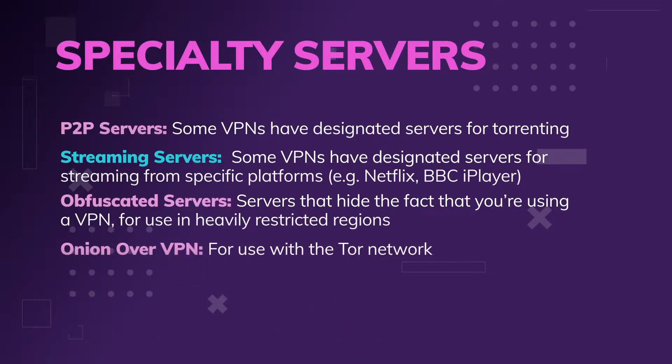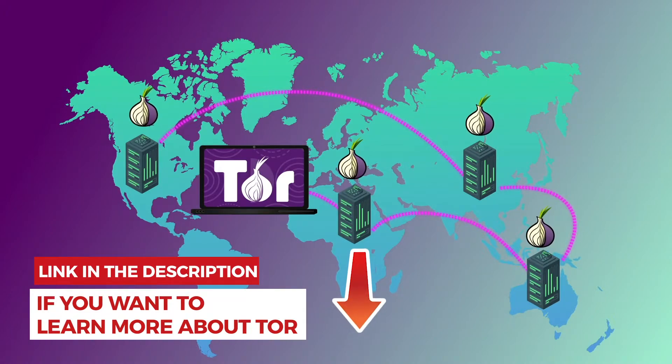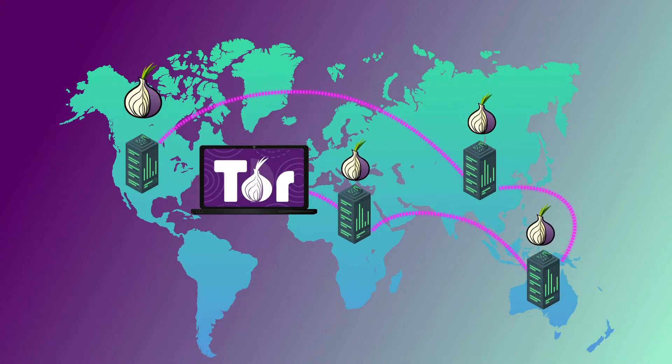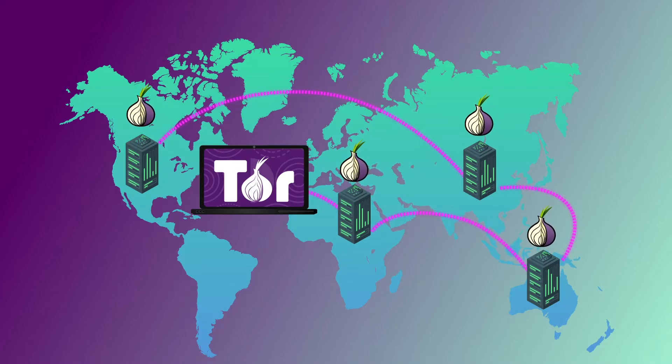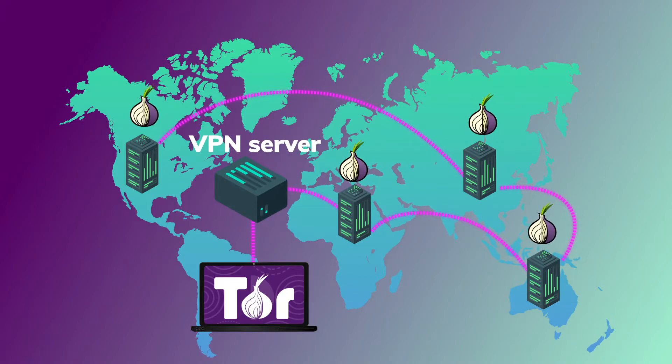Then there's onion over VPN. Tor is a network design based on the onion protocol that is designed to anonymize internet traffic. It doesn't always work as well as it should, and it can and usually should be used in conjunction with a VPN to make sure that your traffic is secure. It has nothing to do with torrenting. But that's basically an extra security precaution you can take if you want to.